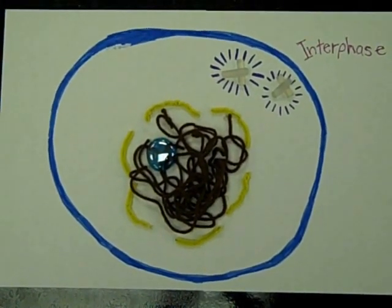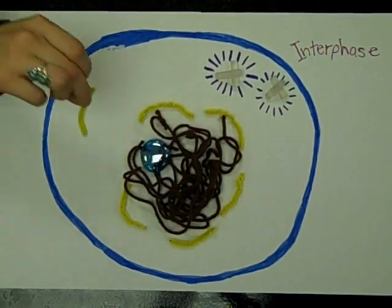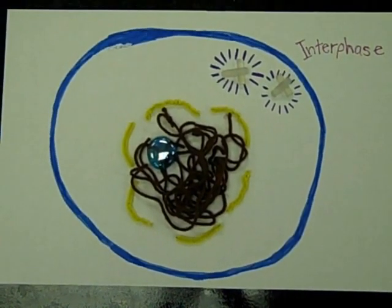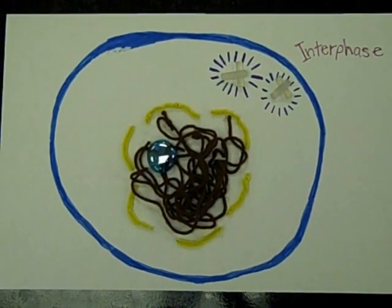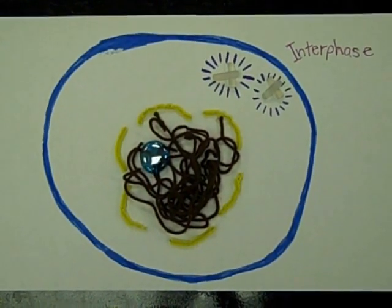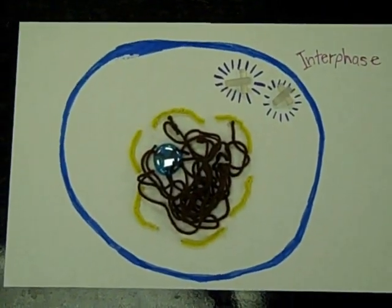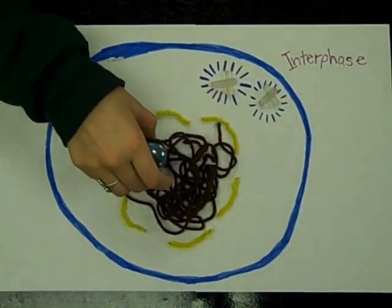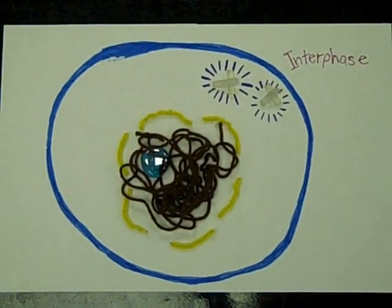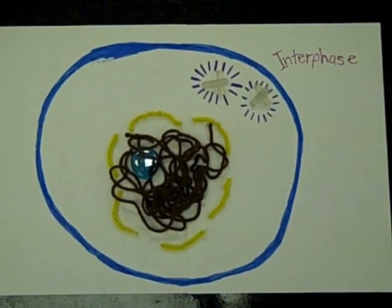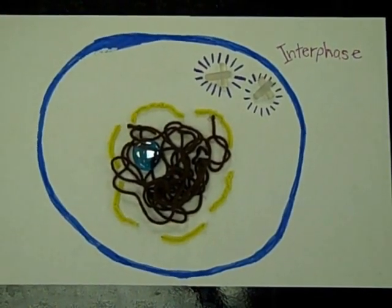My nuclear envelope, which holds my brains in, is completely intact. Inside my nucleus, during interphase, my DNA is slowly duplicated. And I have my nucleolus intact. My nucleolus is used to make ribosomes, which make protein for me to live on. That is interphase.